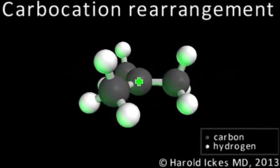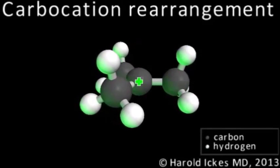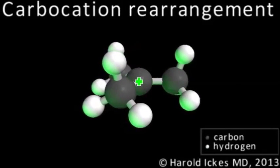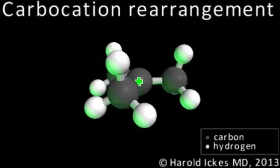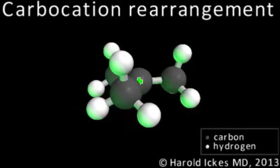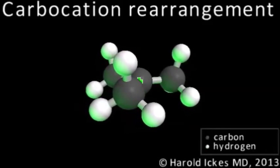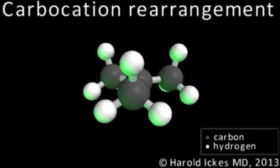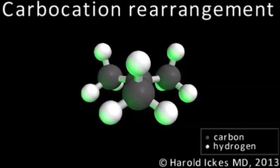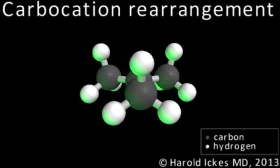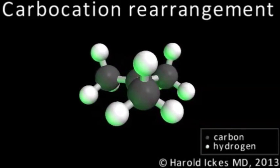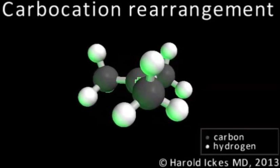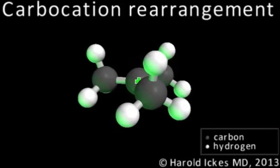A carbocation can be defined as any carbon chain where a positive charge exists on one of the carbons. The carbon with the positive charge has an empty p orbital, which forces the carbon to adopt an sp2 configuration. This is the reason its remaining bonds are splayed out flat, like the points of a triangle.